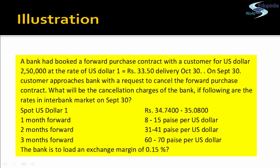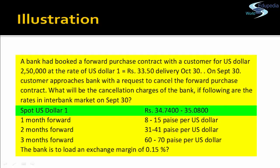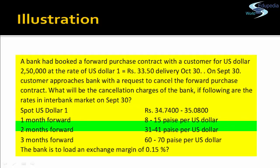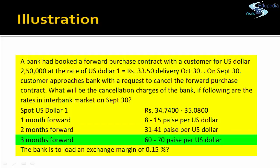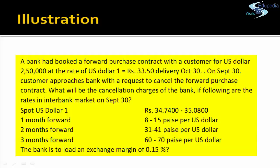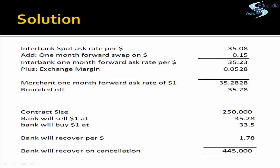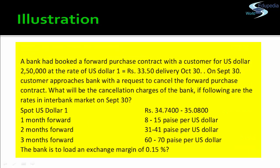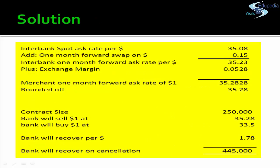What will the cancellation charges be? The interbank market rates on September 30th are: Spot USD 1 = ₹34.74 / ₹35.08; one-month forward: 8 to 15 paise per USD; two-months forward: 31 to 41 paise per USD; three-months forward: 60 to 70 paise per USD. The bank is to load an exchange margin of 0.15%. To compute the bank rate, we first apply the exchange margin. The interbank spot rate is ₹35.08. Adding the forward swap of 0.15 paise gives the effective interbank one-month forward ask rate of ₹35.23, to which we add the exchange margin of 0.15%.